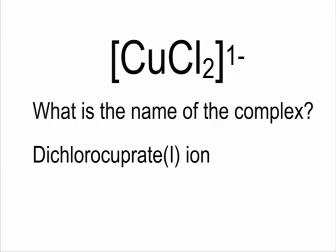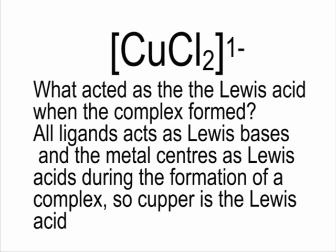So let's give the name for this complex. So it's dichlorocoprate 1 ion. We call it coprate because the complex is an ion. In complexes, all the ligands act as Lewis bases, and the center transition metal acts as a Lewis acid. So the Lewis acid is therefore the copper.